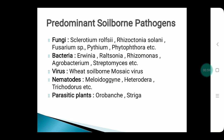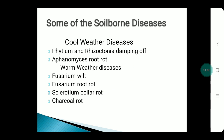The predominant soil-borne pathogens fall in the categories of fungi, bacteria, virus, nematodes, and parasitic plants. Soil-borne diseases come under two categories: cool and warm weather diseases. Examples of cool weather diseases are Pythium, Rhizoctonia damping-off, and Aphanomyces. Examples of warm weather diseases are Fusarium wilt, root rot, Sclerotium collar rot, and cork rot.